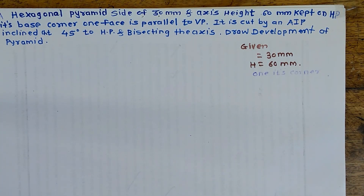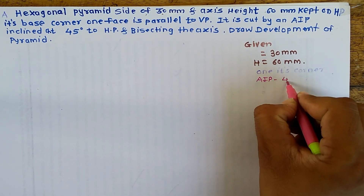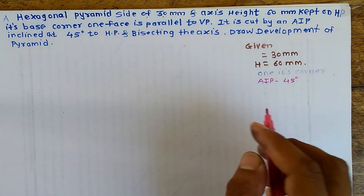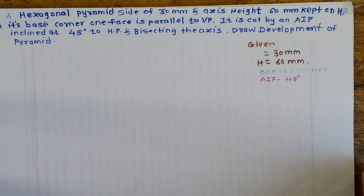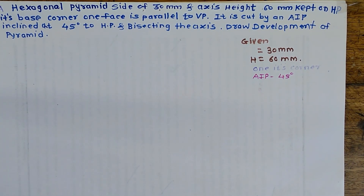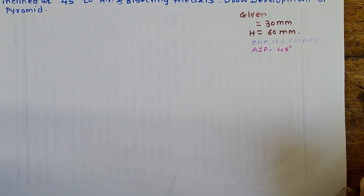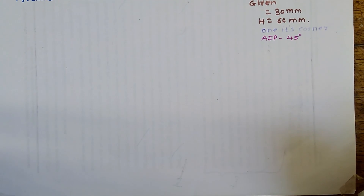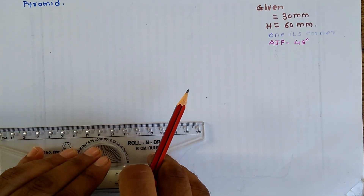Next we have to see that after resting, it will be cut by an auxiliary inclined plane at 45 degrees to the axis, and that axis will be bisected. As per this problem statement, since the pyramid is resting on HP, I will start to draw the XY line.